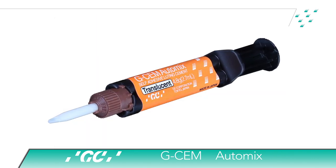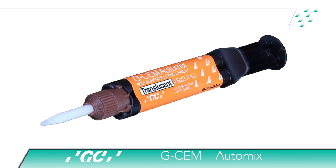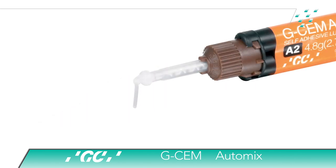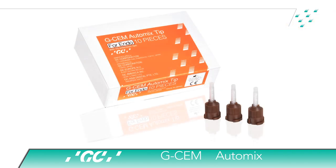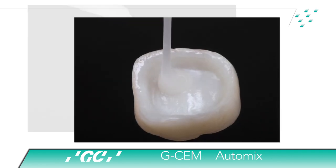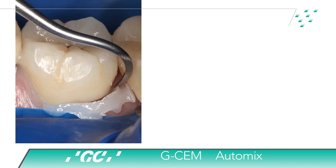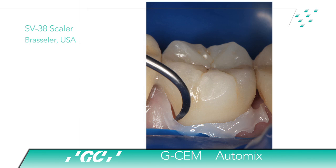A translucent-shaded self-adhesive resin cement, GCM automix, is selected for cementation. For syringe delivery, simply apply the automix tip; for easier intraoral access, there is an optional automix tip with an elongation tip. According to the manufacturer, the automix tip is designed shorter to allow less waste of the material. The resin cement is injected onto the internal surface of the restoration, and the restoration is positioned firmly and light cured for 2 to 4 seconds while maintaining moderate pressure. After initial polymerization, the excess resin cement is removed with an SV38 scaler by Brasseler.